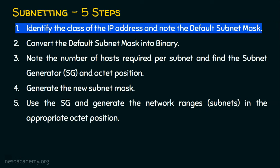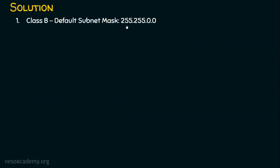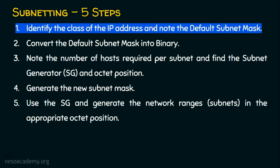Let's start with step number one: identify the class of the IP address and note the default subnet mask. It is a class B IP address and the default subnet mask is 255.255.0.0. Step number one is done.